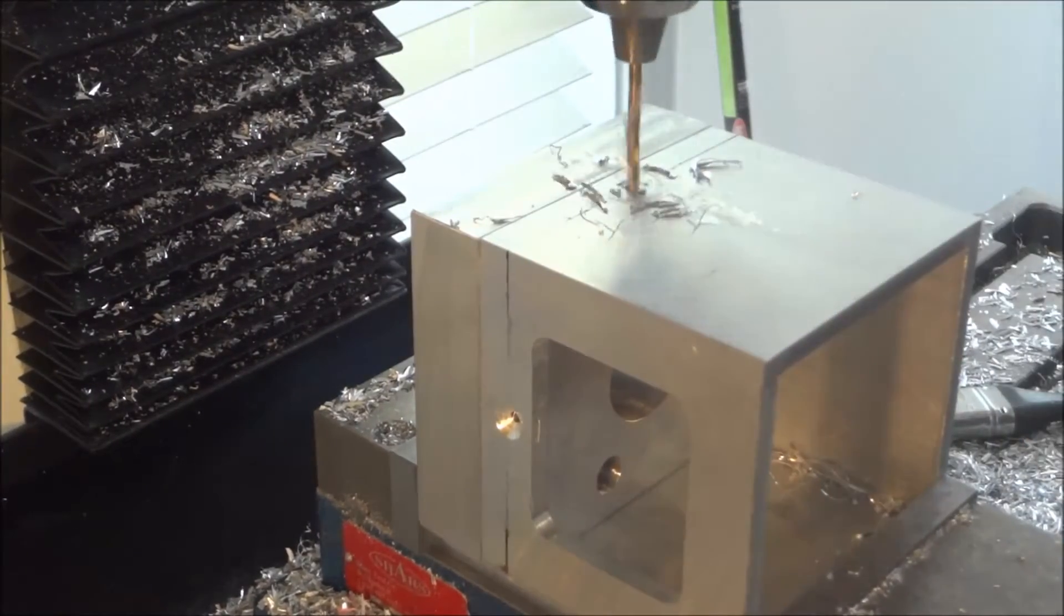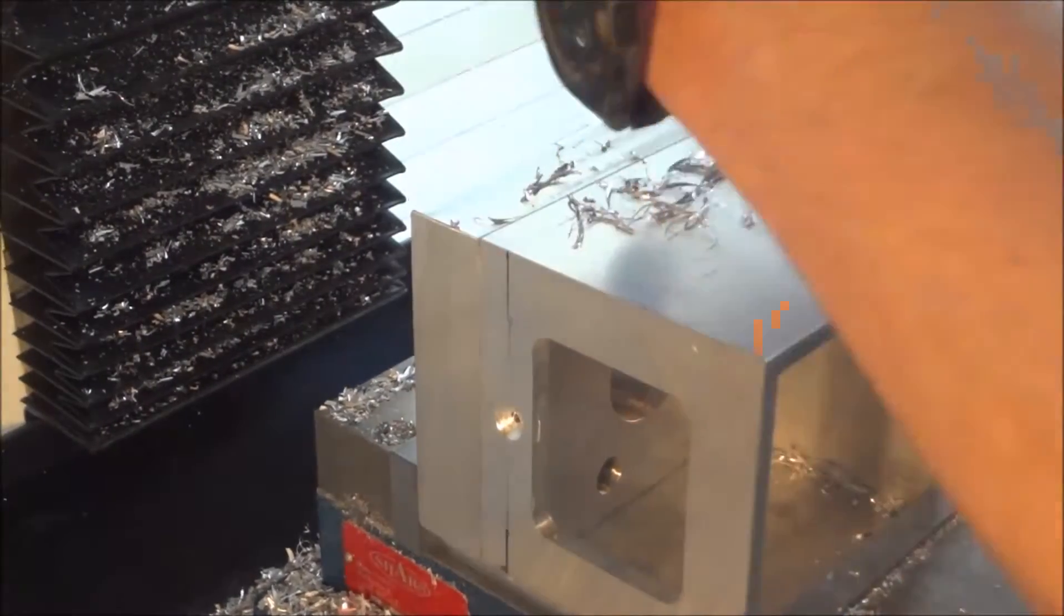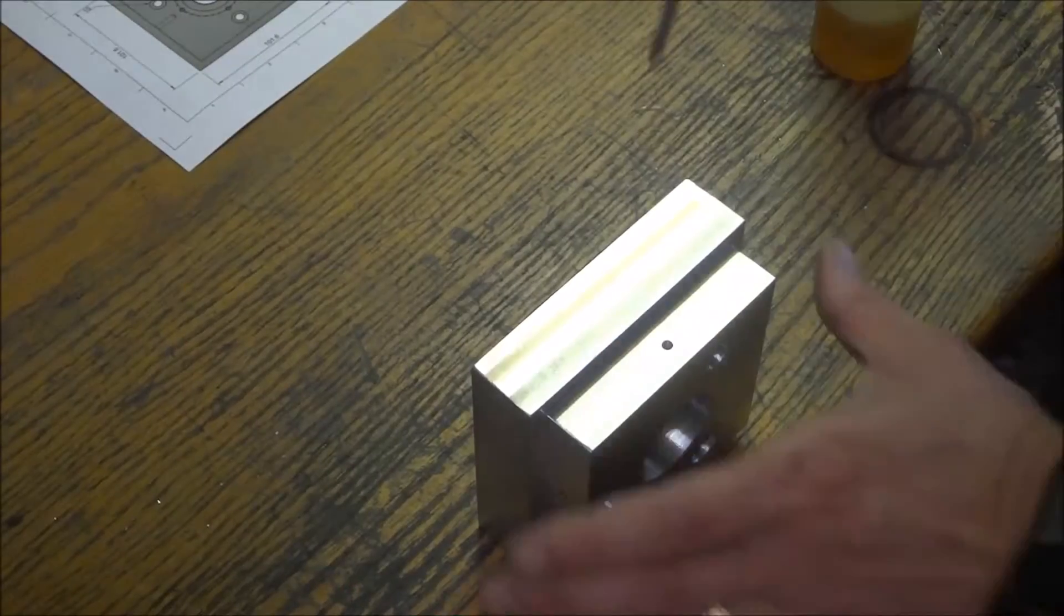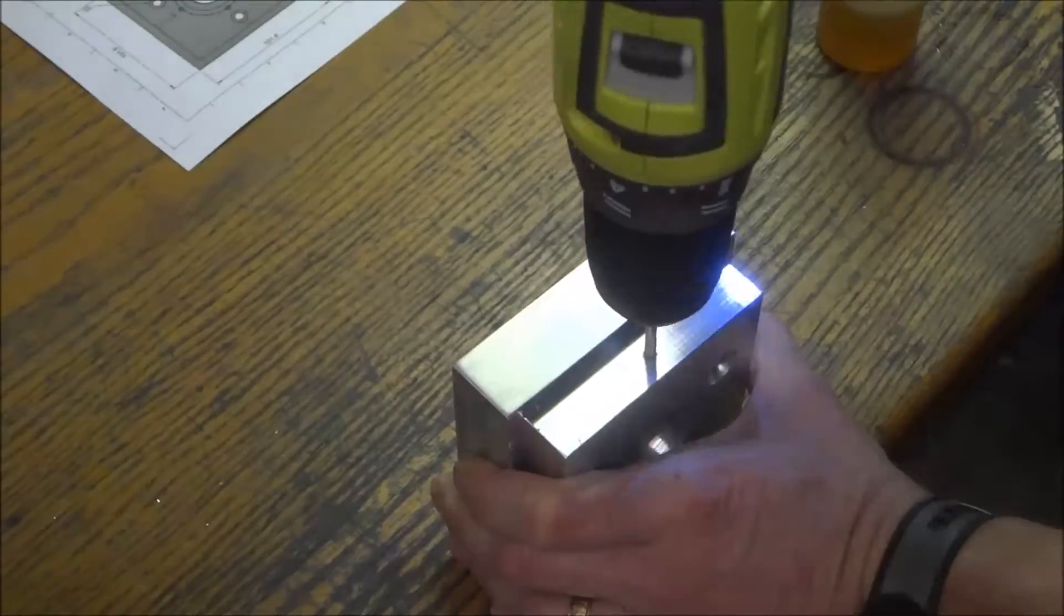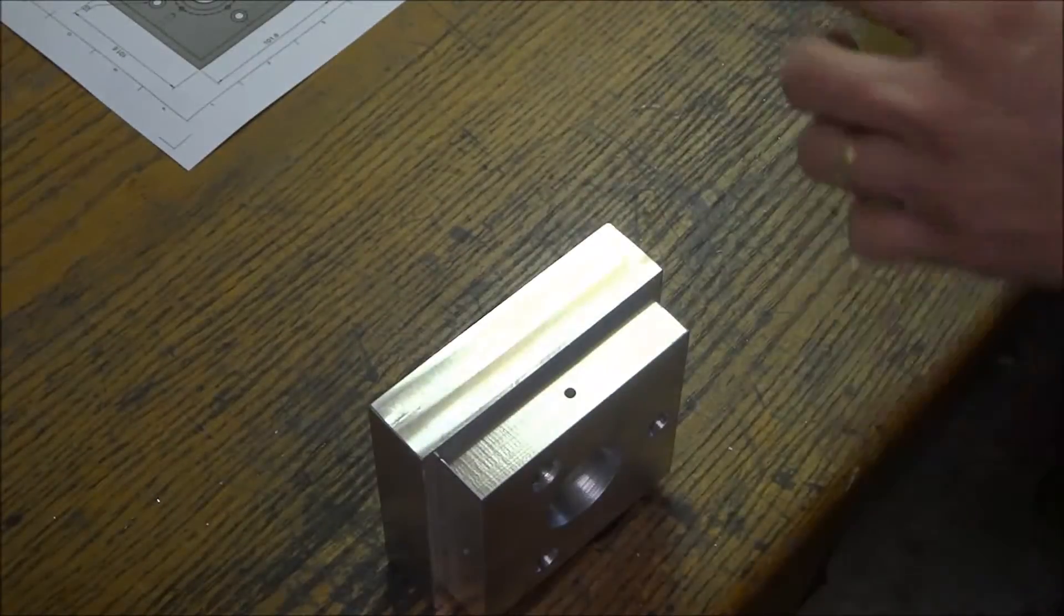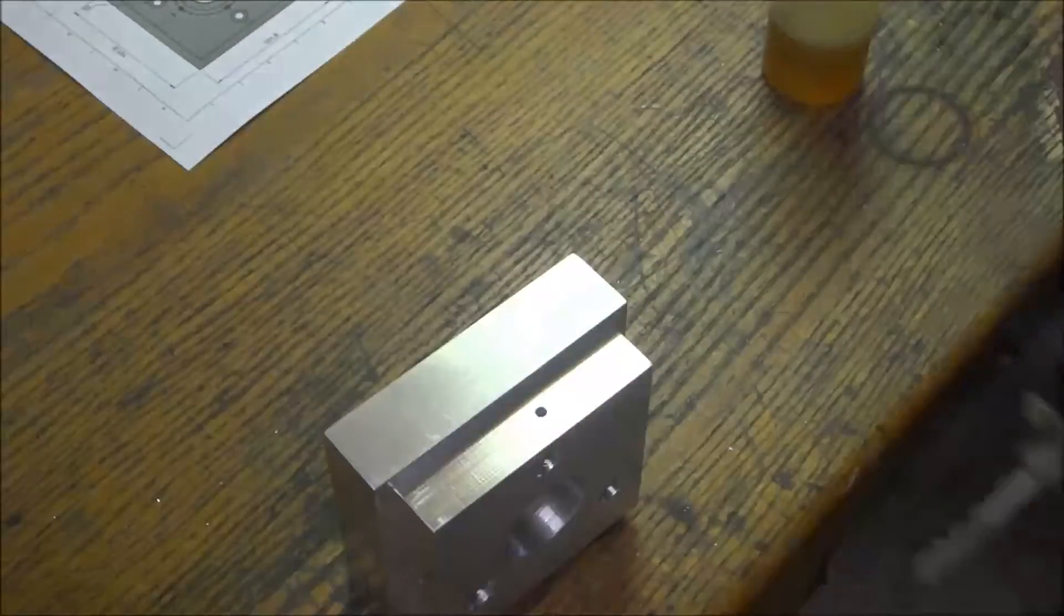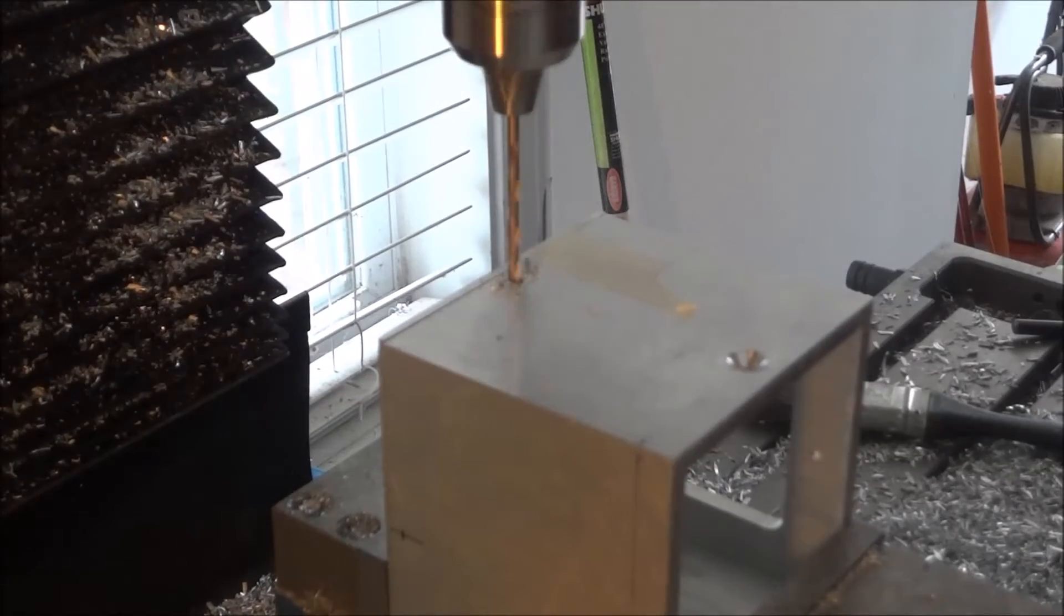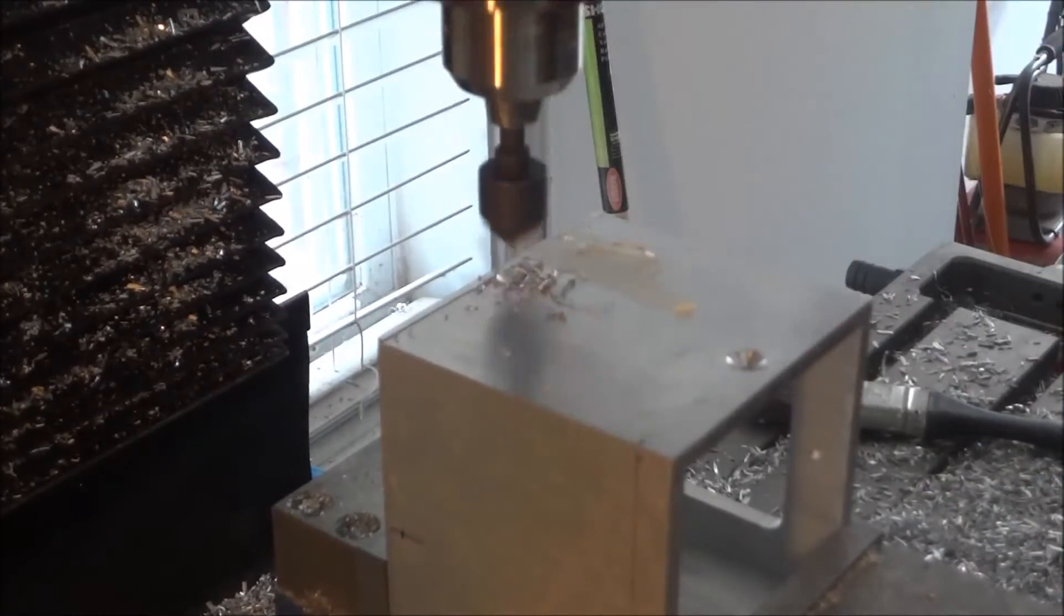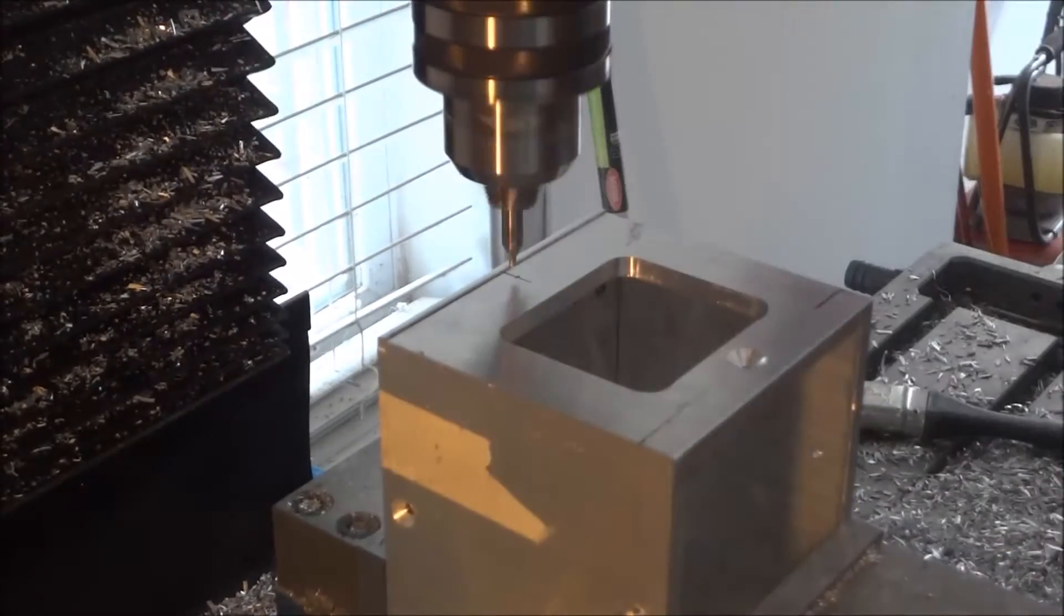Then we're going to take it over to the bench and tap these four holes. This is an m4 by 0.75 tap using countersink socket head screws and they're 12 millimeters long.